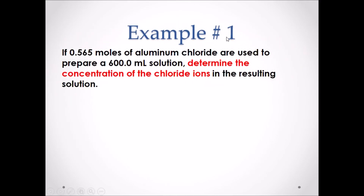Example number one. If 0.565 moles of aluminum chloride are used to prepare a 600 milliliter solution, determine the concentration of the chloride ions in the resulting solution. Pause the video and attempt this example.